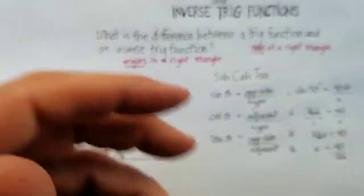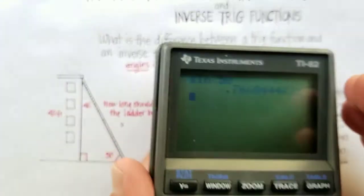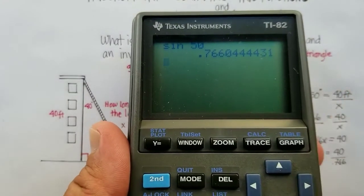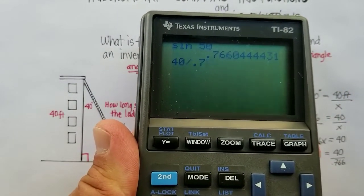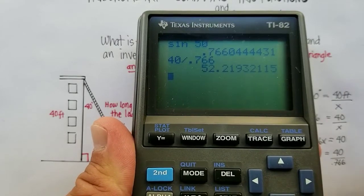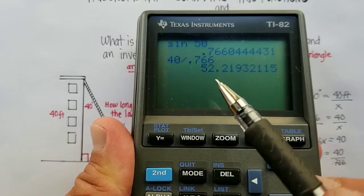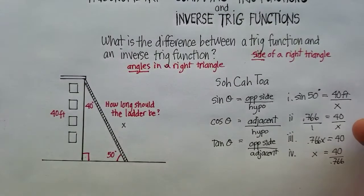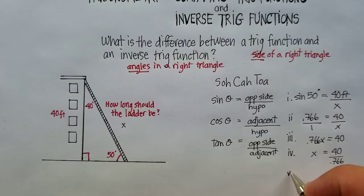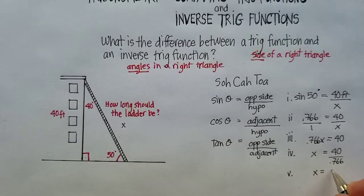Now let's go ahead and do that division and see what we come up with. So, 40 divided by .766, and I get 52.2 feet. So, x is equal to 52.2 feet.